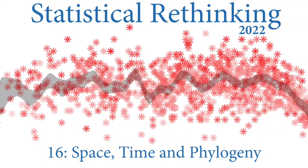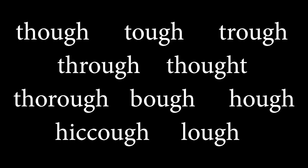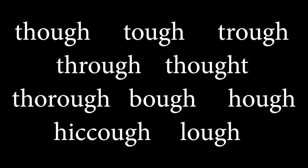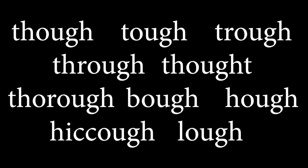To motivate it, let's start with something a little bit more familiar. The English language is a mess — its spelling is largely unpredictable. All of the words on the screen here contain the letters O-U-G-H, but in my dialect every one of them is pronounced differently: though, tough, trough, through, thought, thorough, bow, hock, hiccup, and loch. What happened to this language?